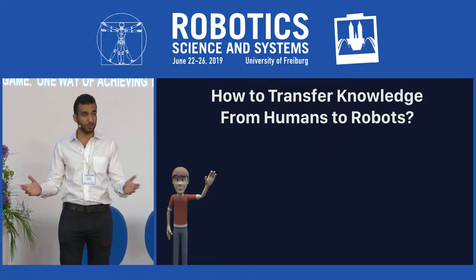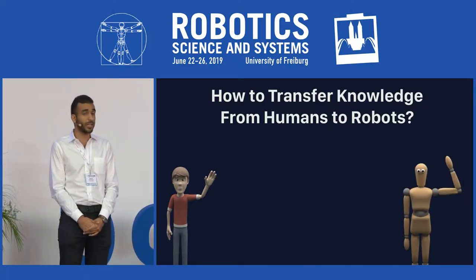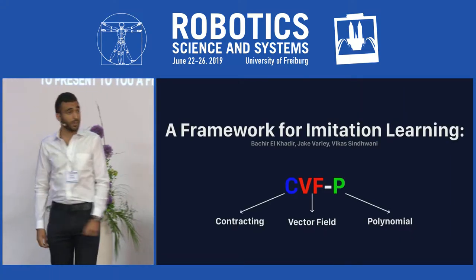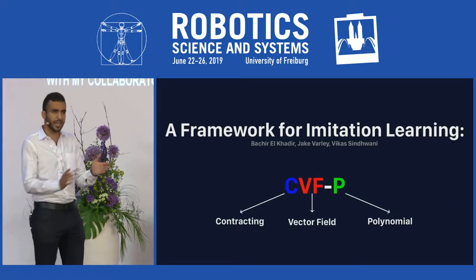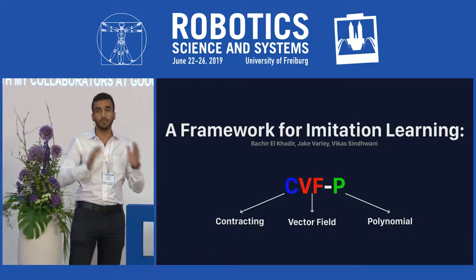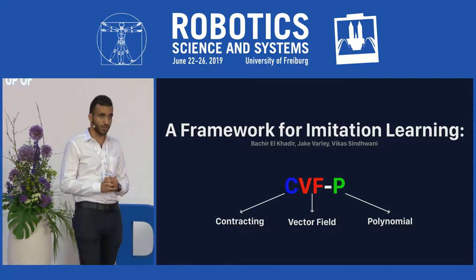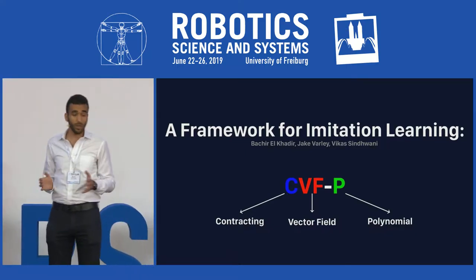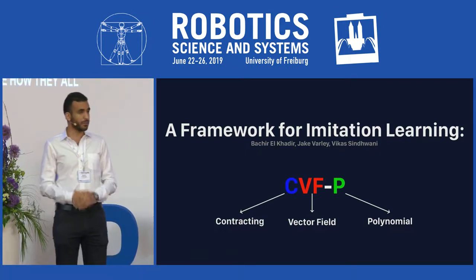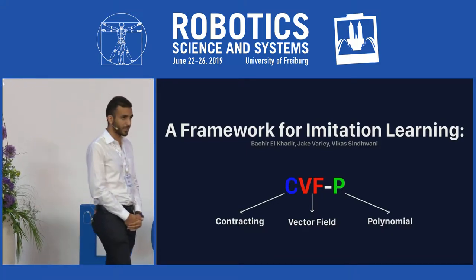One way of achieving that is through imitation learning. My name is Bashir Al-Kadir, and today I want to present a framework for imitation learning I worked on with my collaborators at Google — Jake Varley and Vikas Sinwani. The name is CVFP, made up of three blocks: contracting, vector field, and polynomial. The plan is to walk you through each of these three blocks and see how they come together to form an end-to-end pipeline for imitation learning, with some cool applications at the end.